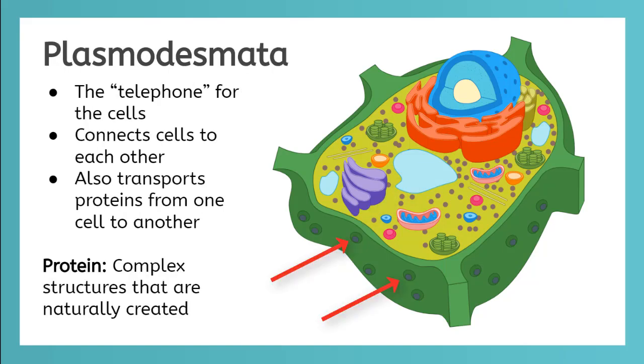There are green dots on the outside of the cell wall. Those are called plasmodesmata. They act as the telephone for the cell and connect cells to each other to transport proteins. The rest of the organelles we're going to talk about might seem familiar if you've already studied the animal cell.